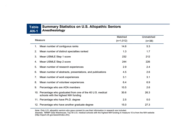This summary table covers everything you need to know about matching to anesthesiology as a USMD student. Starting from the top: the mean number of ranks needed — that is, how many programs you have to rank in order to match — is 14.6. If you rank 14.6 programs, you're probably going to match. The column on the far right shows what unmatched students did: those 45 (or 38 in this case) who didn't match only ranked 5.3 programs on average, so it's no surprise they had worse outcomes.